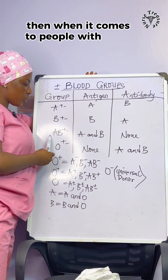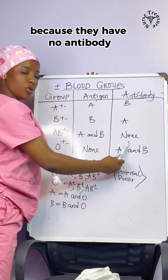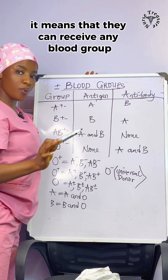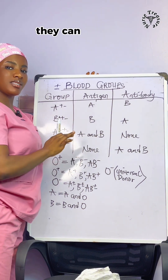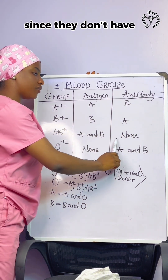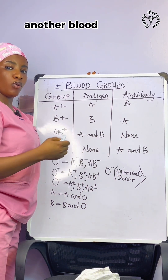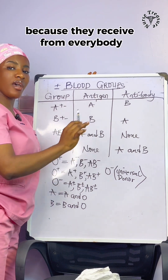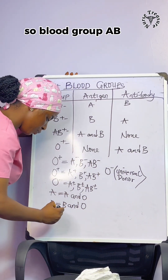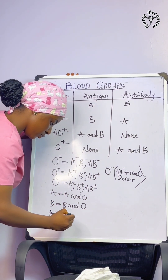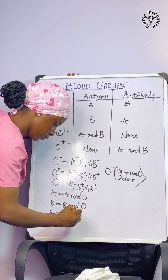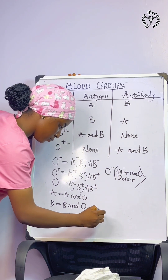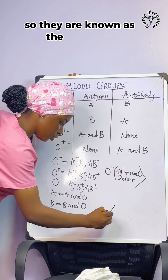When it comes to people with blood group AB, because they have no antibody — no soldiers, no bodyguards — they can receive any blood group. Any other blood group can donate to them since they don't have soldiers that will fight another blood group when it enters their system. So they are known as the universal recipients because they receive from everybody. Blood group AB can receive from A, B, AB, and O.